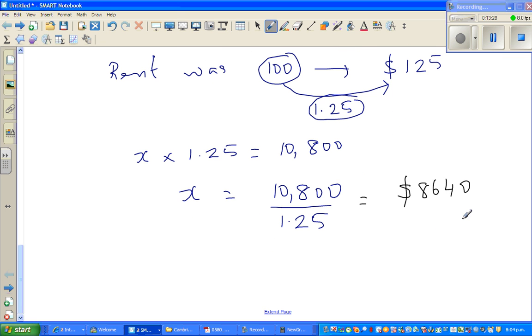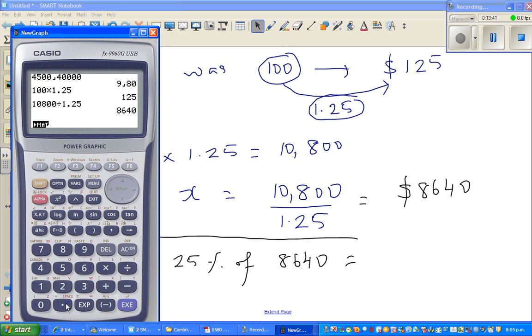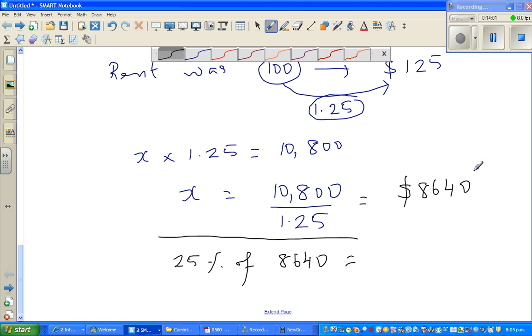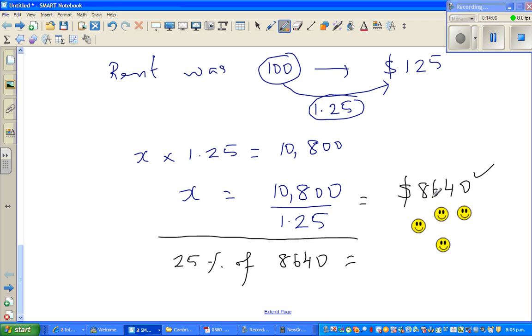So how will we check? You can check this. You times this by 1.25. Or let us check this in a different way. What is 25% of $8,640? That's the increase. So 25% is 0.25 times $8,640, which is $2,160. So you go $2,160 plus $8,640 is $10,800. So our answer is right. And you can be proud about it. And you can give yourself as many smiley faces. See you in the next video.